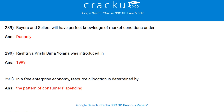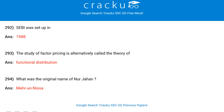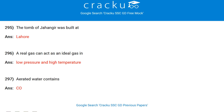The largest producer of bauxite in the world is Australia. Who acts as the channel of communication between the President and the Council of Ministers? The Prime Minister. Buyers and sellers will have perfect knowledge of market conditions under perfect competition. Rastriya Krishi Bima Yojana was introduced in 1999. In a free enterprise economy, resource allocation is determined by the pattern of consumer spending. Securities and Exchange Board of India was set up in 1988.